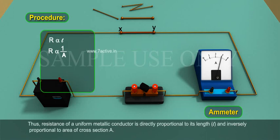Thus, resistance of a uniform metallic conductor is directly proportional to its length L and inversely proportional to area of cross section A.